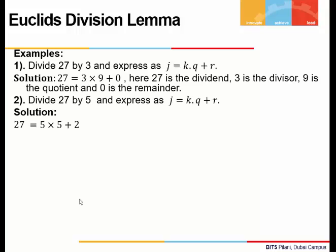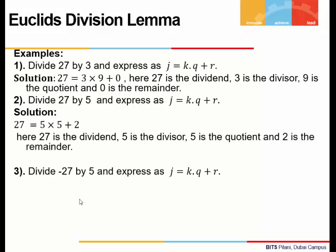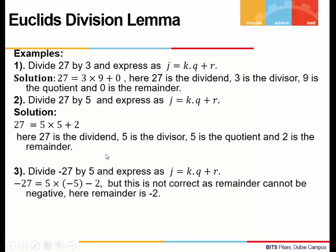Using the division lemma for 27 divided by 3: 27 is completely divisible by 3, so 27 equals 3 times 9 with remainder 0. For 27 divided by 5: 27 equals 5 times 5 plus 2, so the quotient is 5 and the remainder is 2.